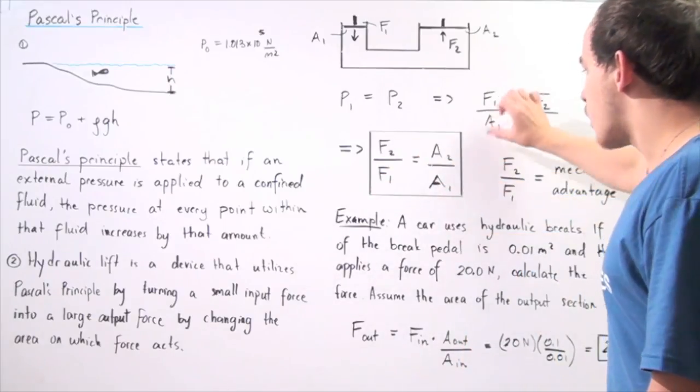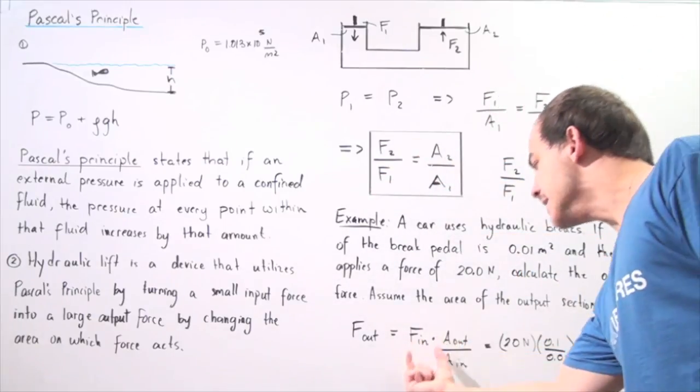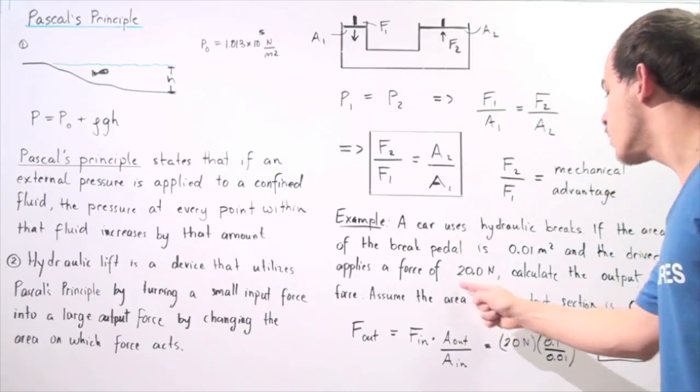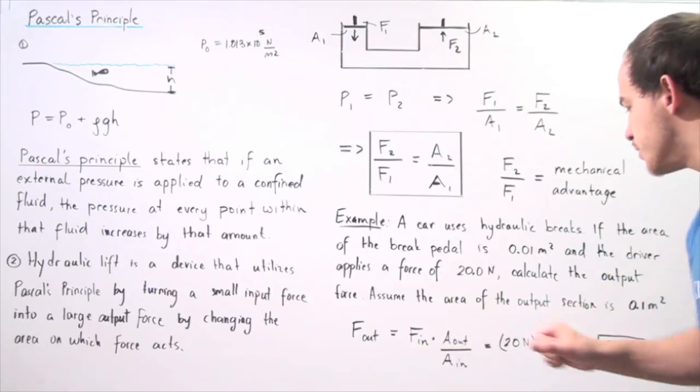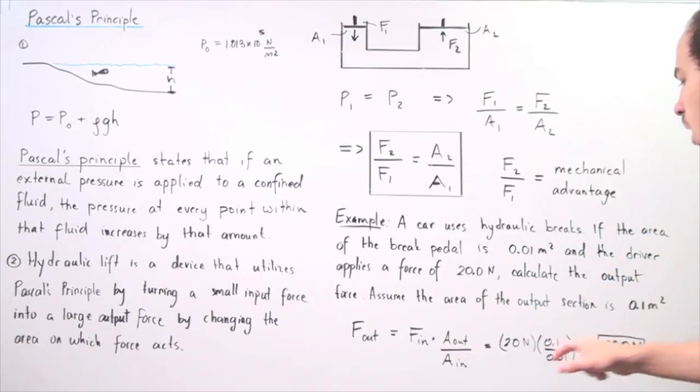We bring F1 to the right side and have the input force multiplied by the ratio of the areas. We plug in our quantities: 20 newtons, this becomes 0.1 and this becomes 0.01. This ratio becomes 10, and 10 times 20 gives us 200 newtons.